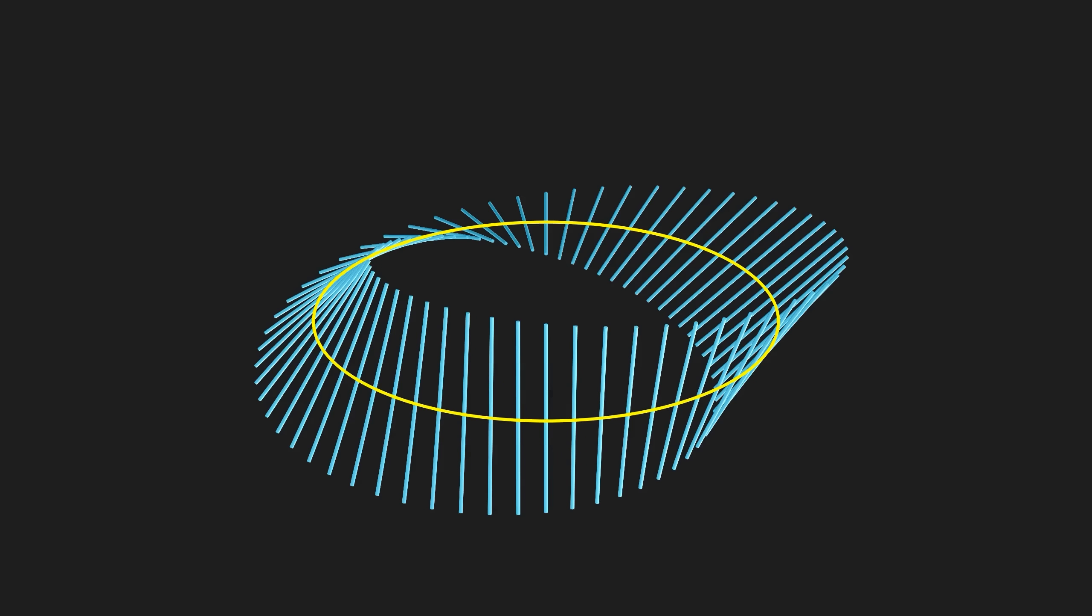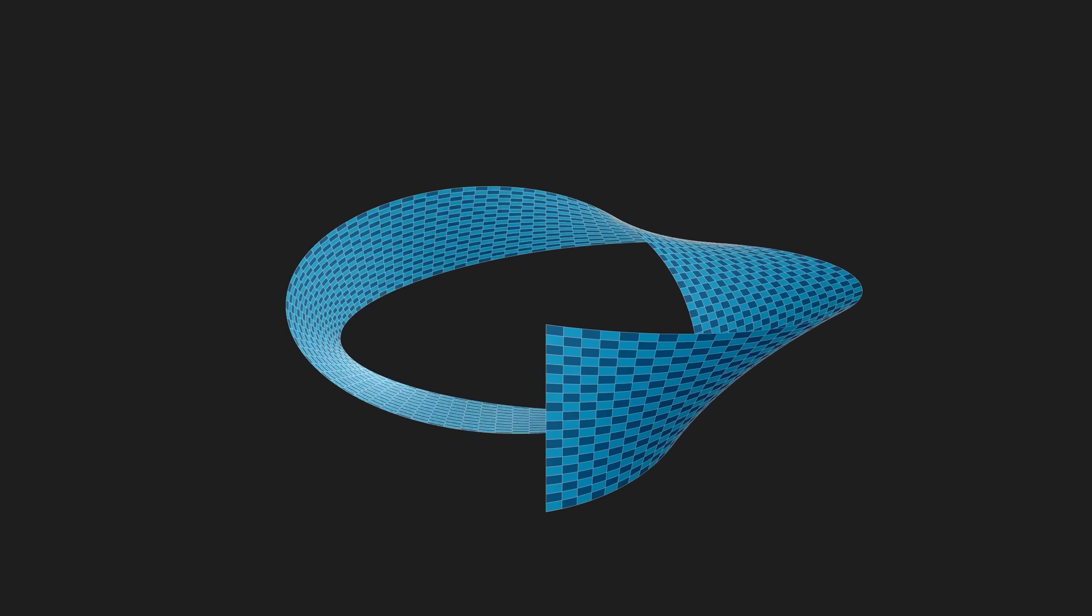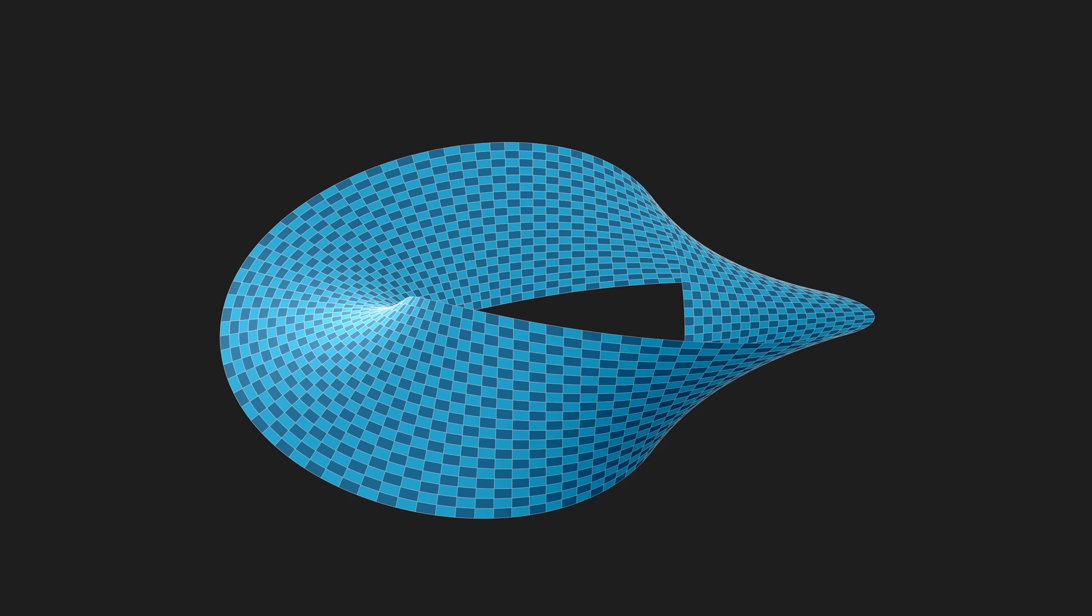It turns out there are only two possible interval bundles over a circle. The Möbius strip is topologically distinct from a cylinder, and one evidence is that the Möbius strip has a single loop as a boundary. If we twist it a second time, the resulting surface is topologically equivalent to a cylinder.